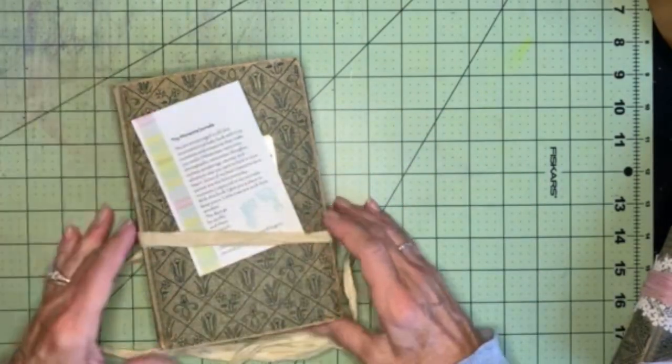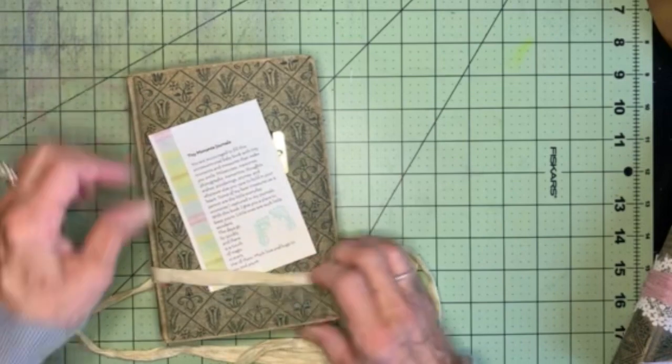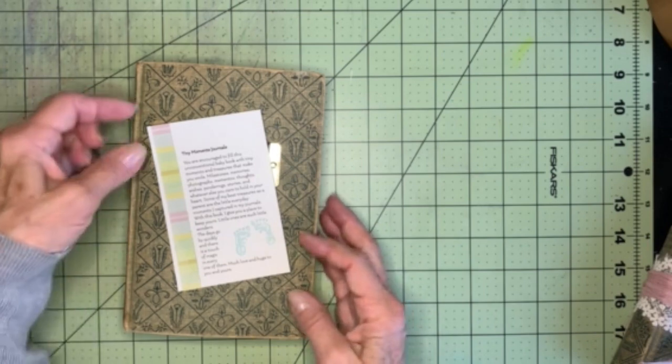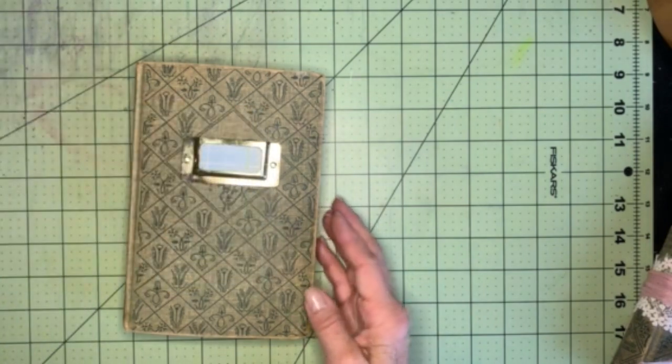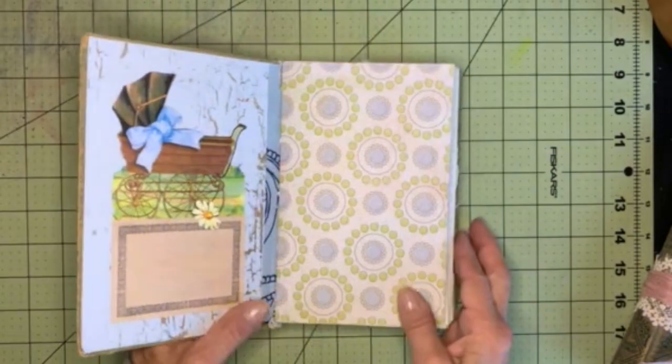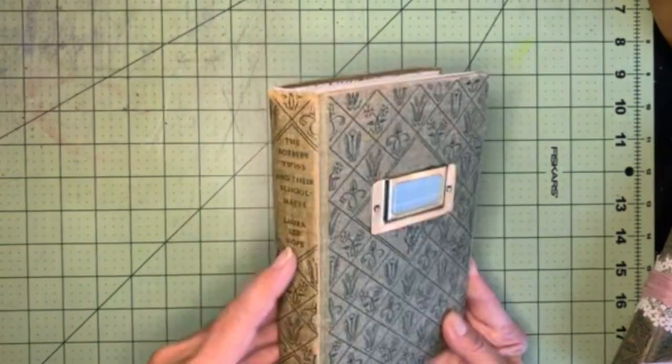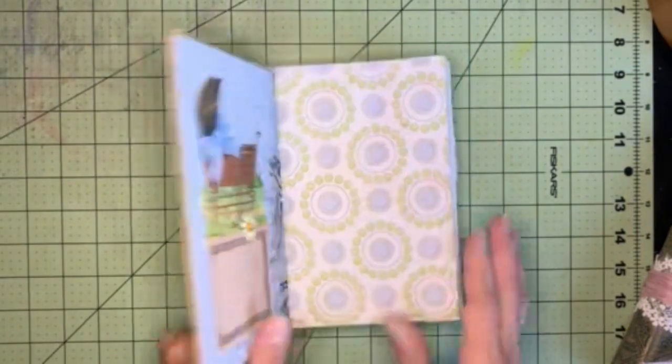And I put these little tags on because I kind of figured maybe they would need a little coaching for how to use them. So it's made out of an old Bobsy Twins hardcover book and I did a hidden spine binding.